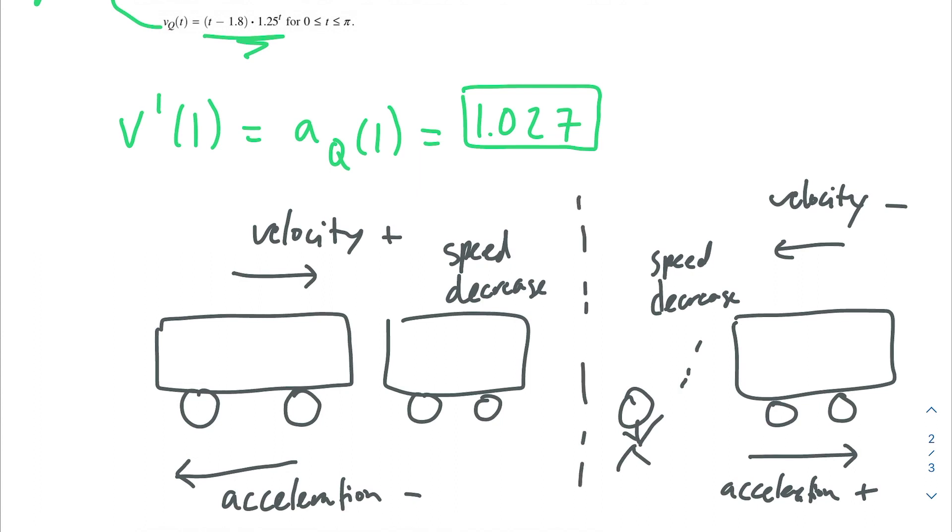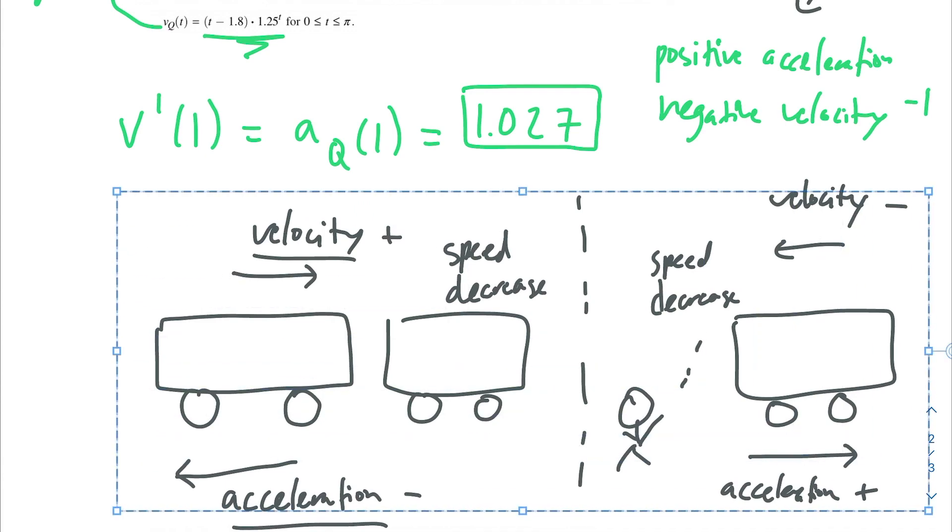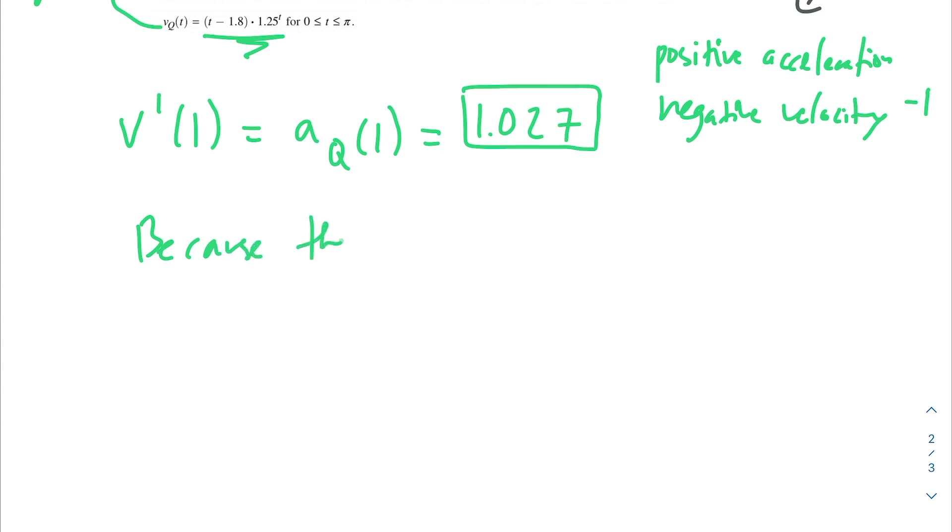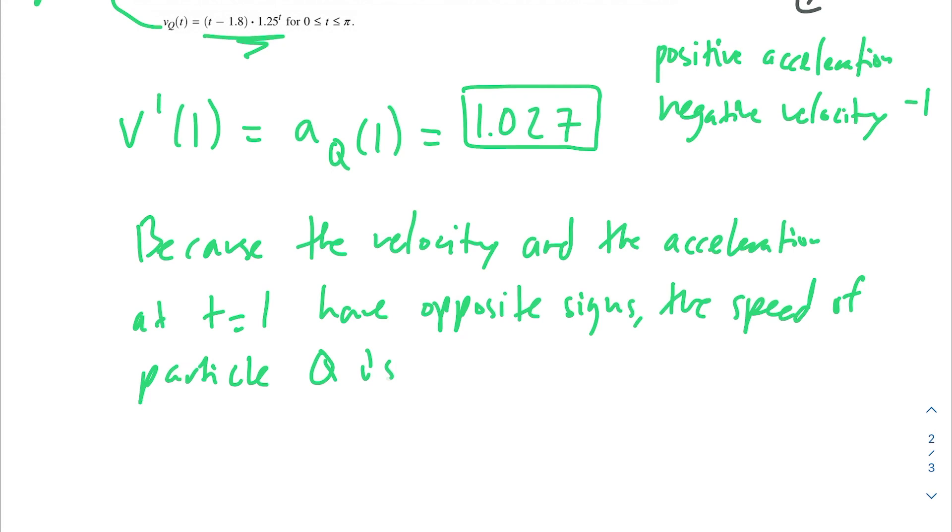So why do I bring up these two situations? Well, the whole point is your speed is going to decrease when the velocity and the acceleration have opposite signs. And in this situation, that's exactly what happens. Our acceleration is 1.027, so we have a positive acceleration. But then we have a negative velocity, right? We solved for that in our last problem, it's minus 1 at t equals 1. So in this case, going off of our car examples, we would say that because the velocity and the acceleration at t equals 1 have opposite signs, the speed of particle Q is decreasing.